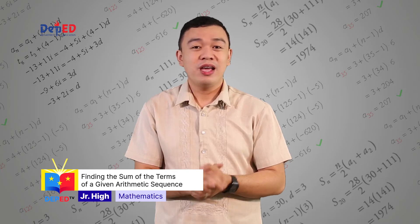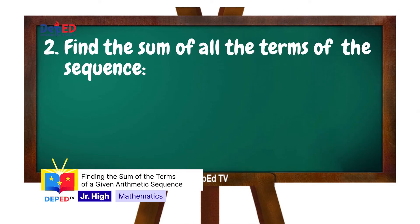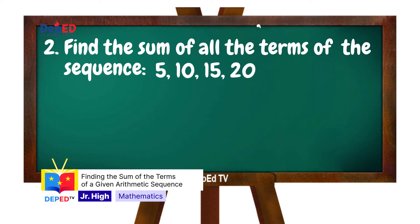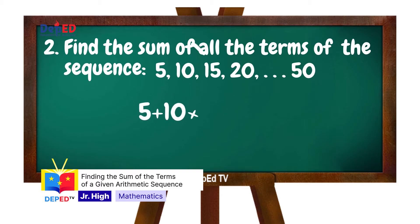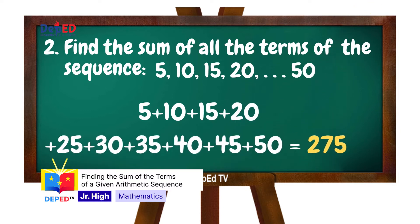Number 2: Find the sum of all the terms of the sequence. By listing all the terms of the sequence and adding them, we have 5 plus 10 plus 15 plus 20 up to 50. You will get 275. Thus, the sum of the terms of the sequence is 275.